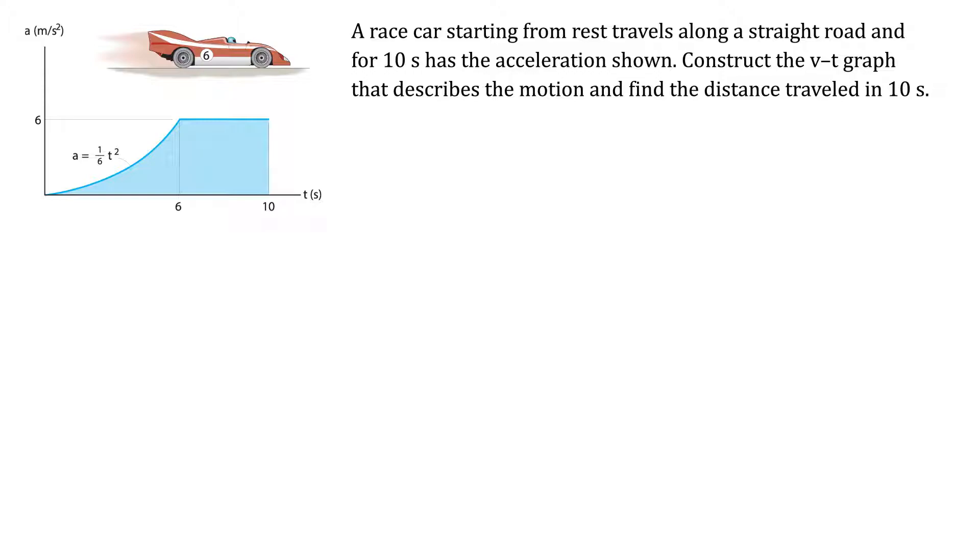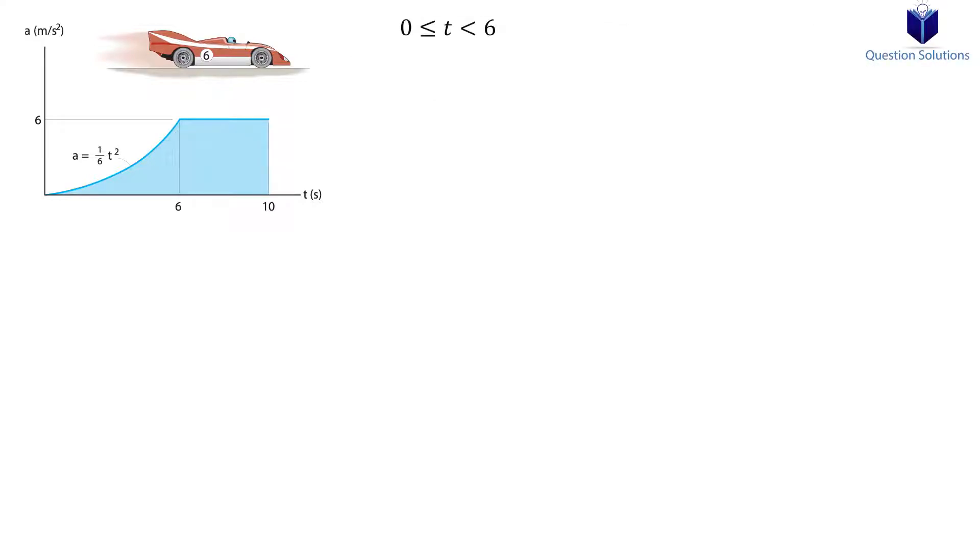First, we need to write down the equations for each segment of the acceleration-time graph. For the section between 0 to 6 seconds, we have a is equal to 1 over 6 t squared. The section between 6 and 10 seconds is simply a equals 6.